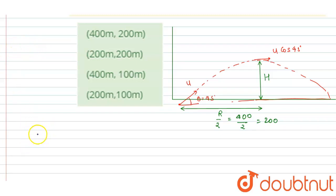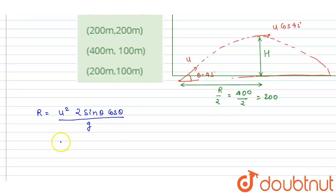So if I talk about the range, we know that the range is equal to u² sin θ cos θ by g, right? And the maximum height is equal to u² sin² θ by 2g. So if you divide them, H by R